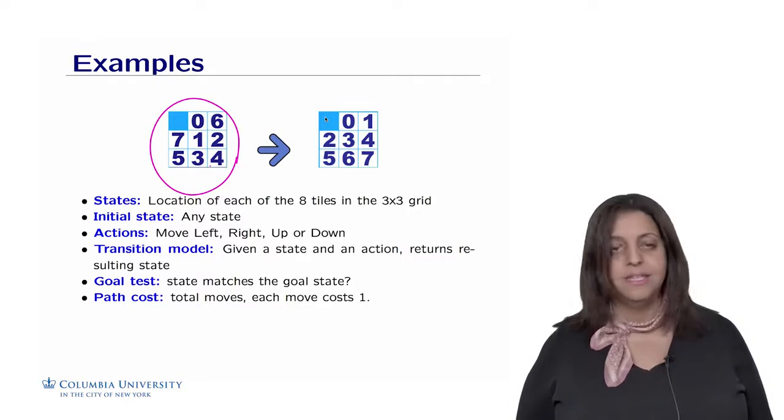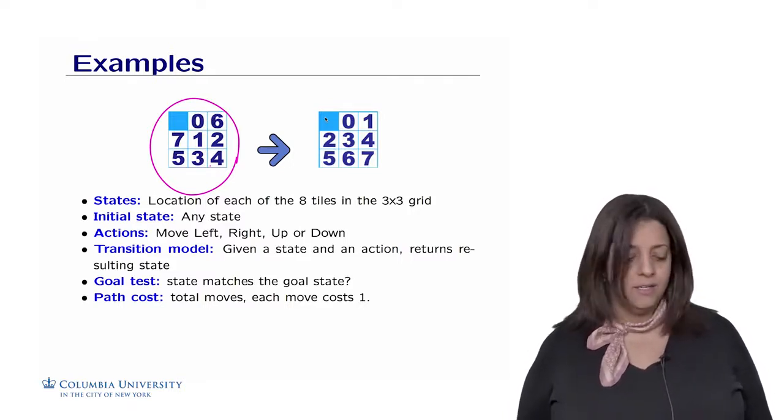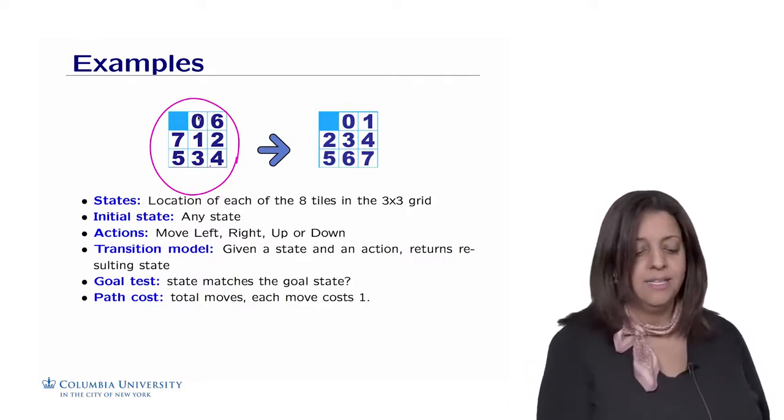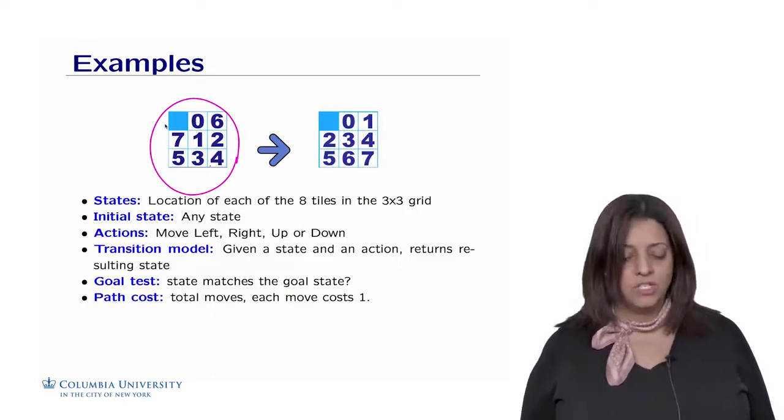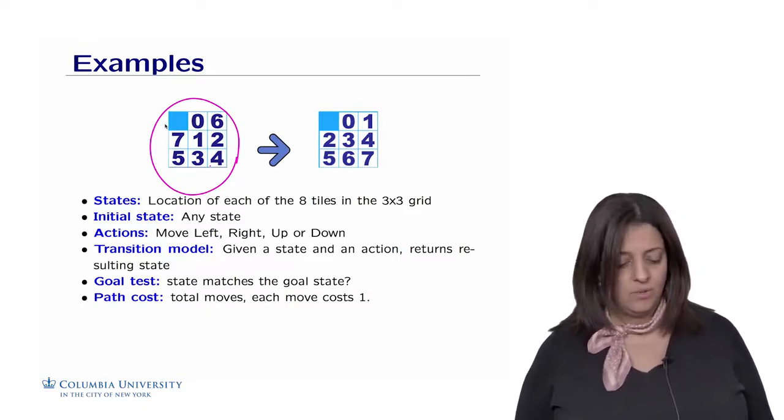A transition model is given a state and action, it will return a resulting state. So if you are in the state and we move the 0 to the left, we are transitioning the state from one state to another one.